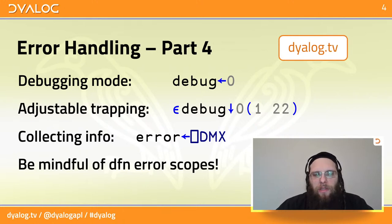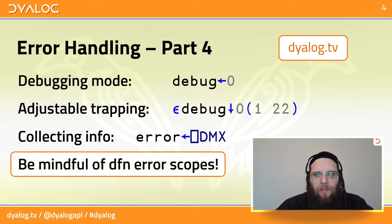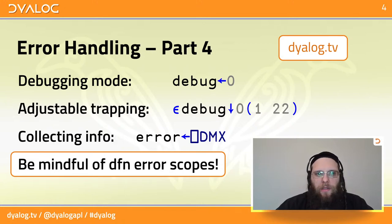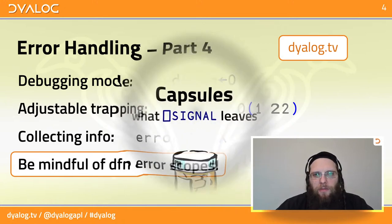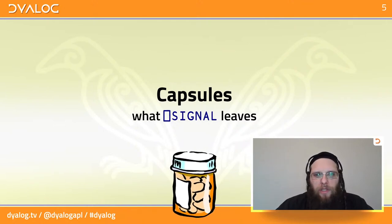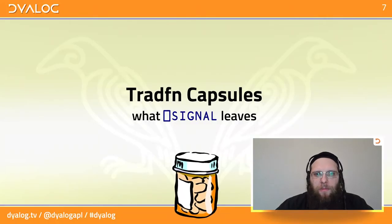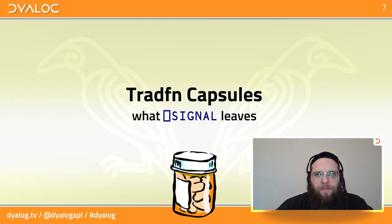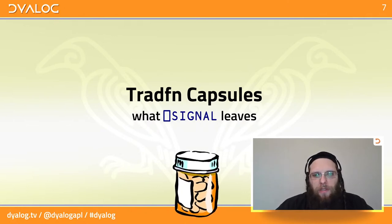At the very end of the previous webinar, I spoke about the scope of errors happening inside dfns and mentioned what I called capsules. Unfortunately I ran into some technical problems when I spoke about capsules in tradfns, so I'll go over this again.